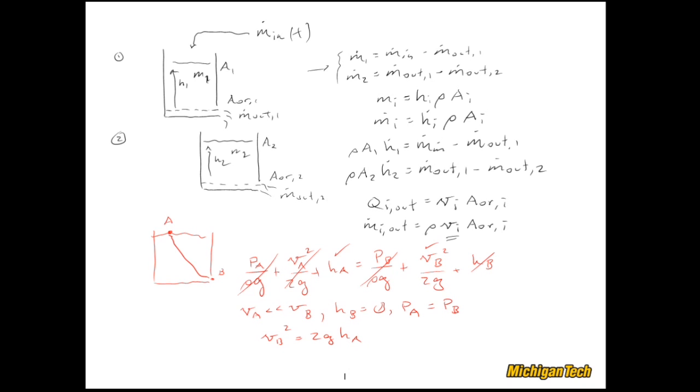Now, let's take what I just did in red and map it to our tanks up above in black. The V B is just the VI, and the HA is just the HI. So let me switch back to black. And what this gives us is that VI is equal to the square root of 2 G HI. And we're pretty much there.